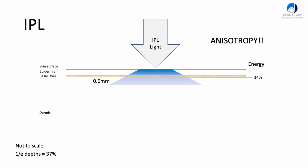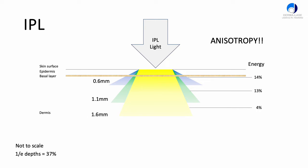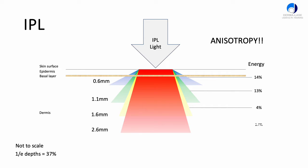The green light will spread like this — its anisotropy is not quite as bad as blue light, so it doesn't spread out quite so widely, and it will penetrate to about 1.1 millimeters depth. Green light constitutes about 13% of all the IPL energy. Yellow penetrates down to about 1.6 millimeters, but there's only about 4% of this energy in the yellow band — it's not a large bandwidth at all. The red and orange colors penetrate to about 2.6 millimeters and constitute about 17% of all the energy.